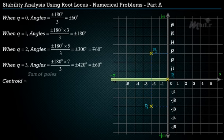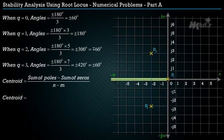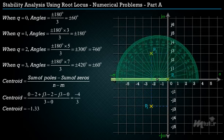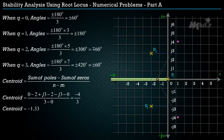The formula for the centroid is applied by substituting corresponding values, giving a centroid of −1.33. This centroid point is marked on the real axis, and from it, the asymptote angles of ±60° are marked using a protractor. These asymptotes are drawn as dotted lines as shown on the screen.